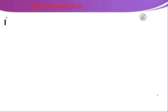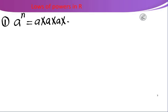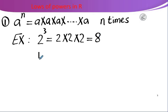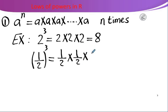Rule number 1: A to the power n equals A multiplied by A, n times. For example, 2 to the power 3 equals 2 × 2 × 2 = 8. Another example: 1/2 to the power 3 equals 1/2 × 1/2 × 1/2 = 1/8.